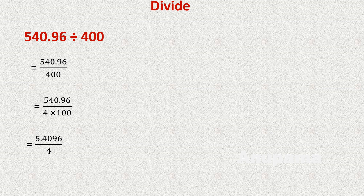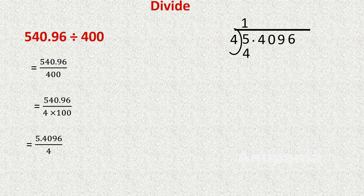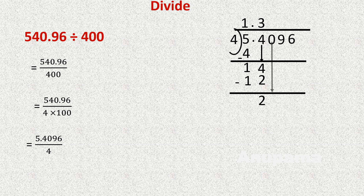Now we divide 5.4096 by 4. We write 5.4096 with divisor 4. The table of 4 in 5: 4 ones are 4; subtract, giving 1. We place the decimal point and bring down 4, making 14. 4 threes are 12; subtract, giving 2. Bring down 0: 4 fives are 20; subtract, giving 0.